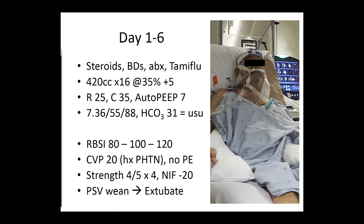It's time to get the patient off the ventilator. You do a Rapid Shallow Breathing Index (RSBI) assessment — respiratory rate divided by tidal volume — and get 80. After 30 minutes the number becomes 100, and after one hour total it's 120. The cutoff of 105-100 is the limit for reasonable extubation — 120 is too high. There may be pulmonary vascular disease as CVP is 20, with a history of pulmonary hypertension but no known PE.